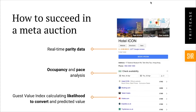Moving on to metasearch: there are a few different ways to really succeed in the auction. The first is simply to be there. We know users are there — OTAs are getting 24% of their inbound traffic from metasearch, that's massive, one in four of their inbound users. For the average hotel it's only 2%. There's this enormous difference between how well hotels are monetizing the power of meta versus what the OTAs are doing. As a client once put it to me: it's like a shopping list — if you're not there, you're not going to get bought.